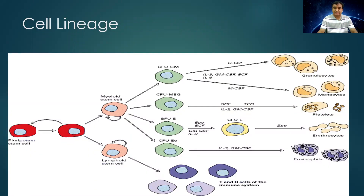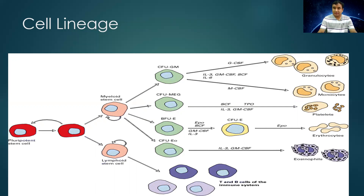Before discussing the different myeloproliferative diseases, we have to know about the cell lineage. Looking at the pluripotent cells, they have two parts: the myeloid part and the lymphoid part. The lymphoid stem cells give rise to lymphocytes — T and B lymphocytes — whereas from the myeloid stem cells there arise different granulocytes like neutrophils, monocytes, platelets, RBCs, and eosinophils.